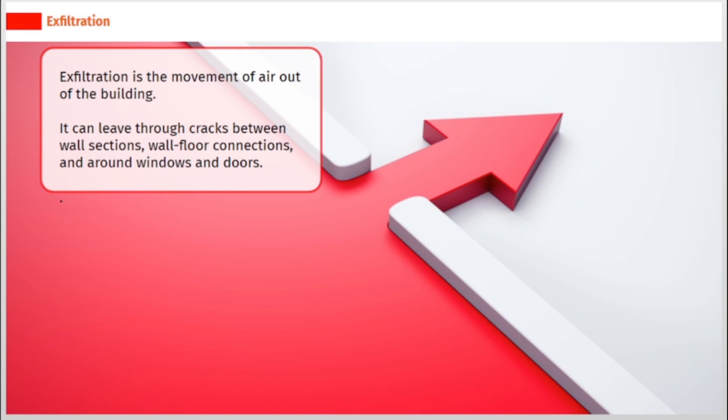Exfiltration is the movement of air out of the building. It can leave through cracks between wall sections, wall floor connections, and around windows and doors.